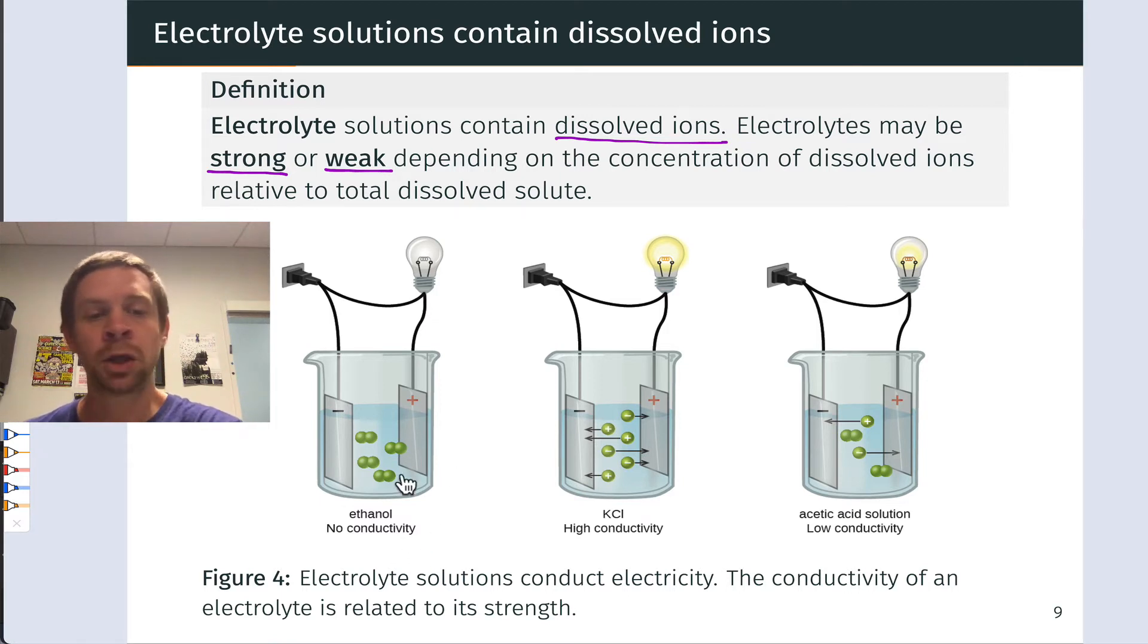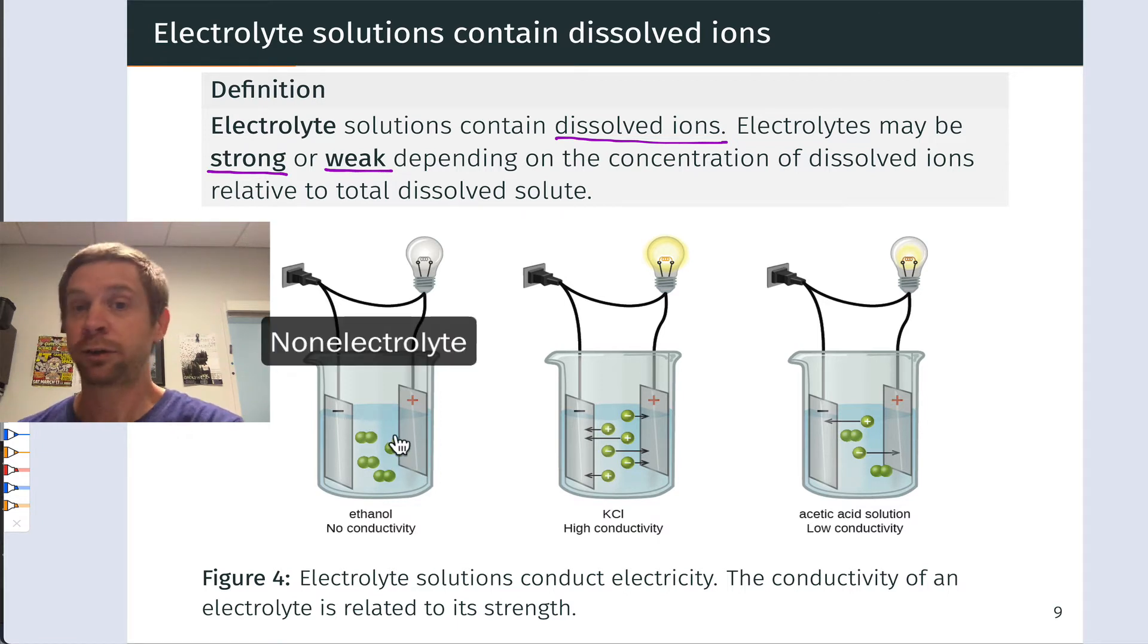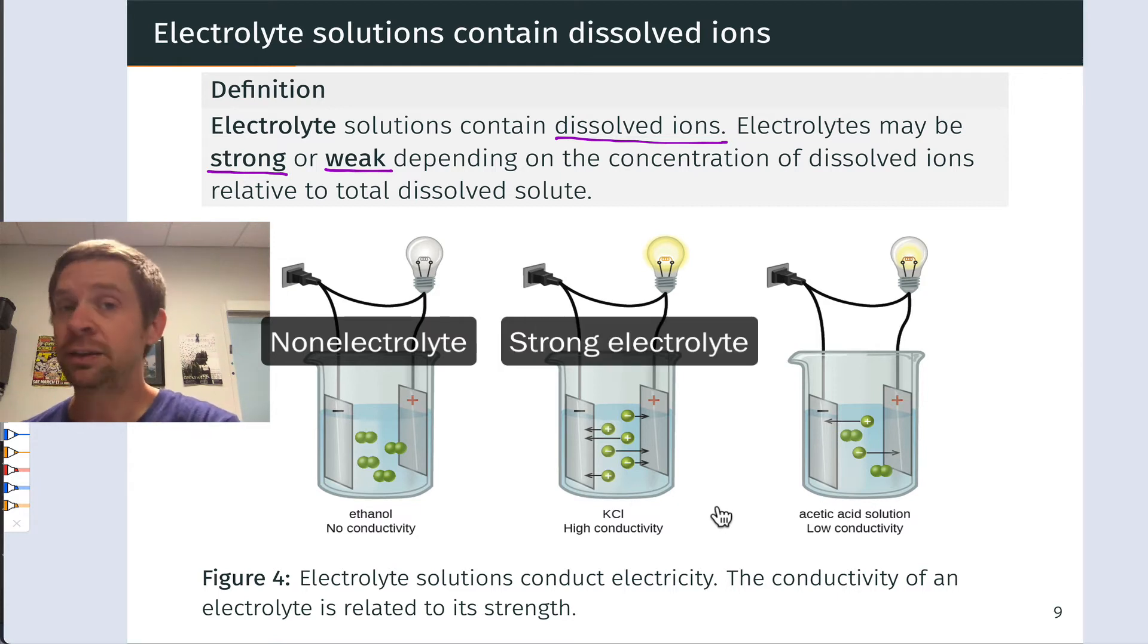Here we see three examples of solutions that have different conductivities and are classified differently in terms of electrolyte status. Ethanol, which is a covalent molecule that is entirely neutral when dissolved in water, exhibits no conductivity. Doing an experiment like we just did with ethanol would lead to that LED or a light bulb not lighting up at all. There are no ions within this solution to carry charge. Potassium chloride is a classic example of a strong electrolyte. When we dissolve KCl in water, it dissociates completely into K-plus and Cl-minus, and the movement of those ions facilitates the flow of charge and the flow of current through the solution. So we get high conductivity, the light bulb, or the LED is bright.